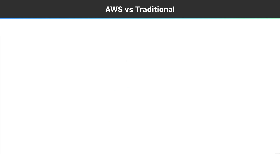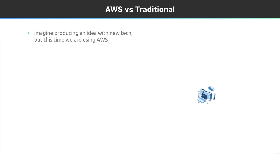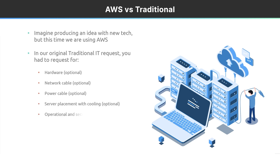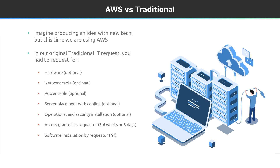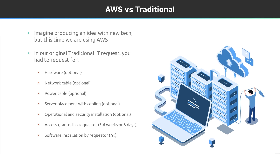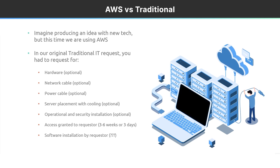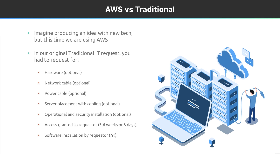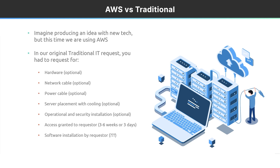If we convert that to a tech idea using cloud computing, imagine you want to produce an idea with new tech, but you're not using traditional IT — you're using AWS. In a traditional data center request, you had to request server hardware like racks, networking cables, internet connection, power, server placement with cooling, and have operations and security come install everything. Sometimes this could take days, weeks, or even months before you could install your software.